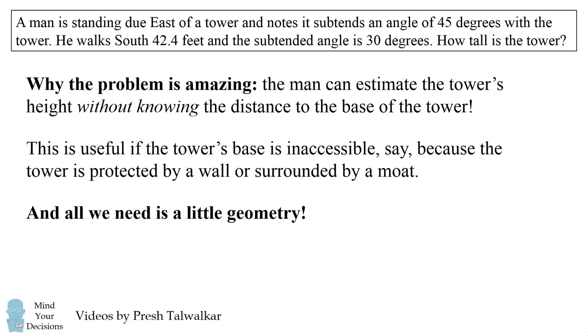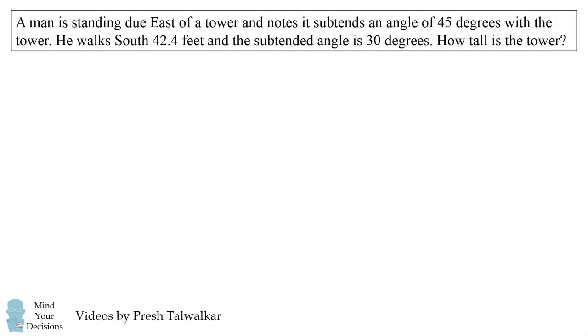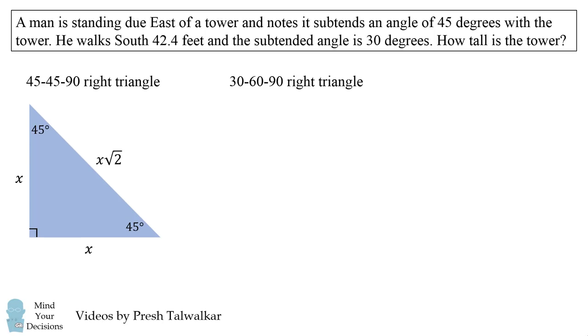In particular we'll use some properties of right triangles. We'll use the 45-45-90 isosceles right triangle. In this case both of the legs have the same length. We'll also use the 30-60-90 right triangle. In this case if the leg opposite 30 degrees is y, the leg opposite 60 degrees will be y times the square root of 3.